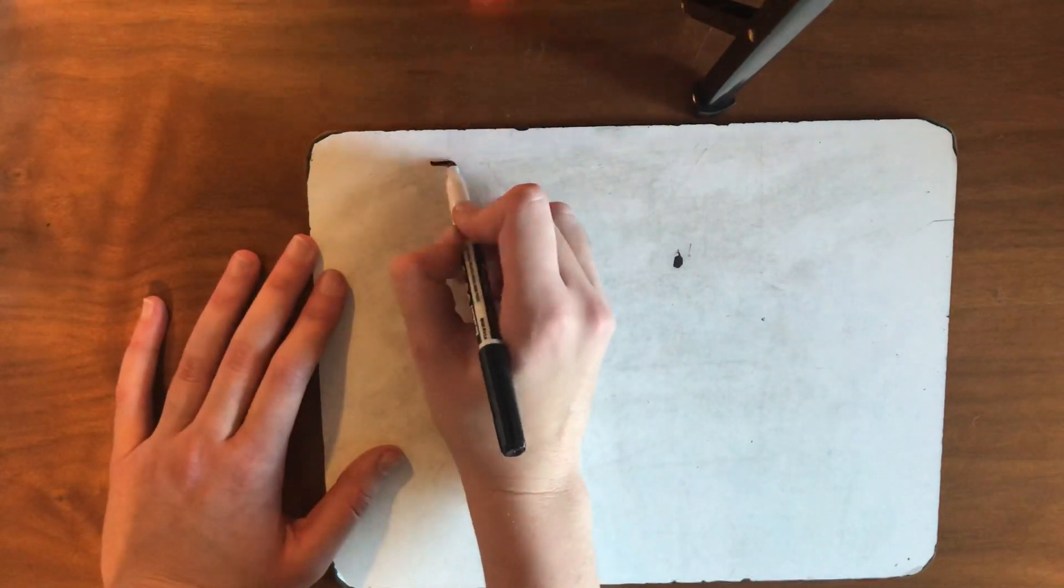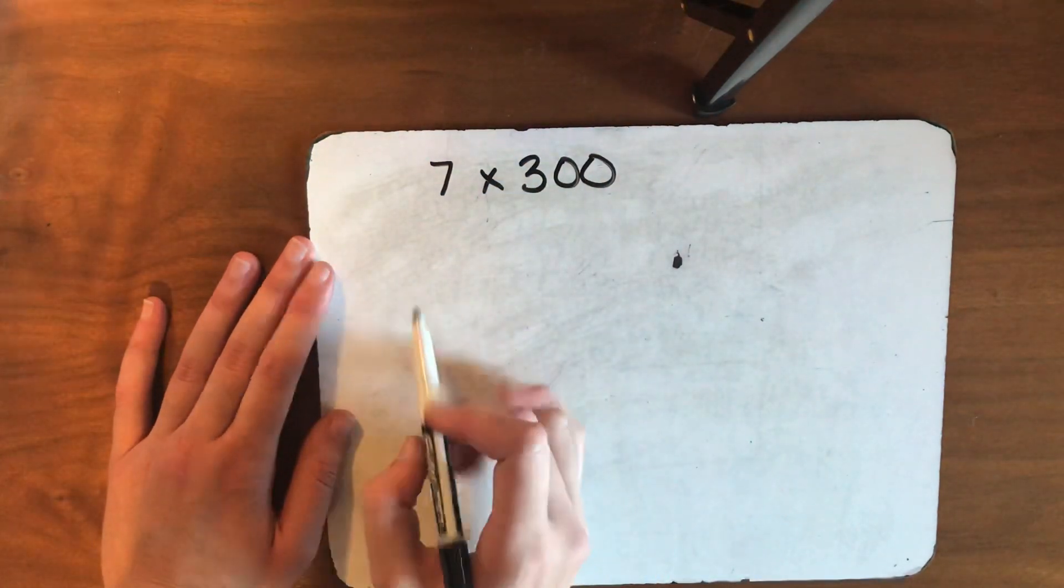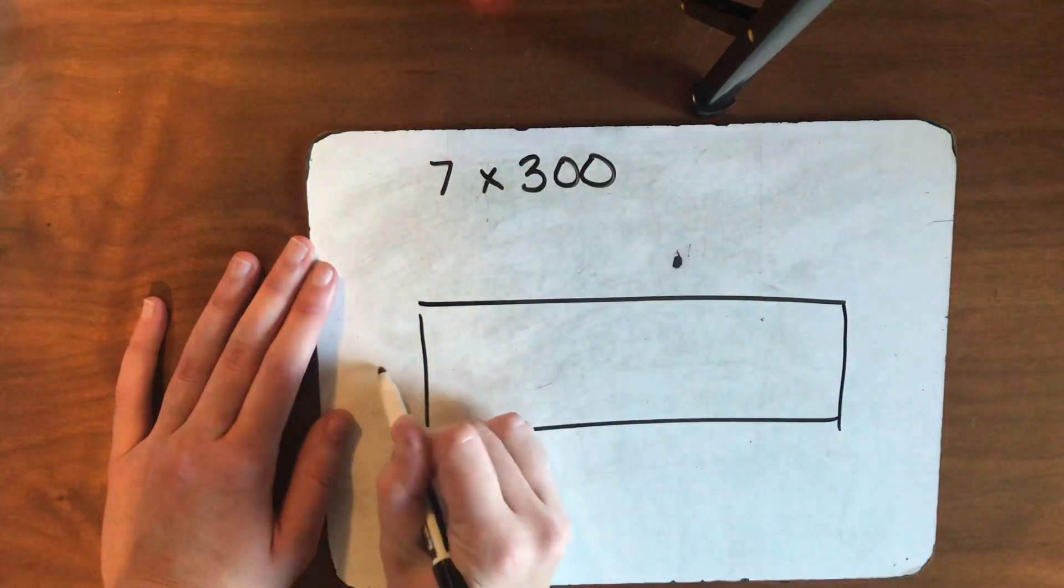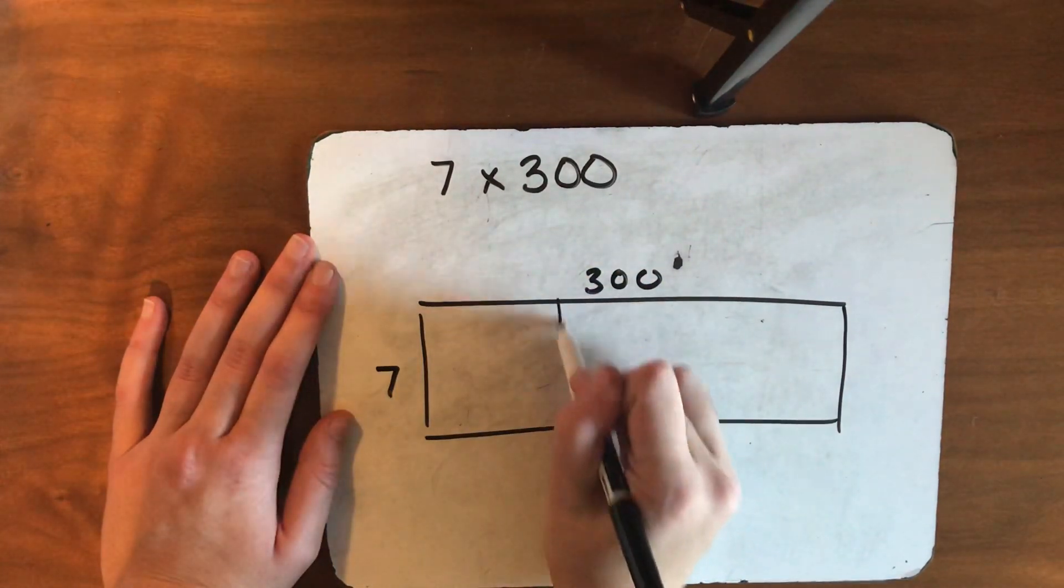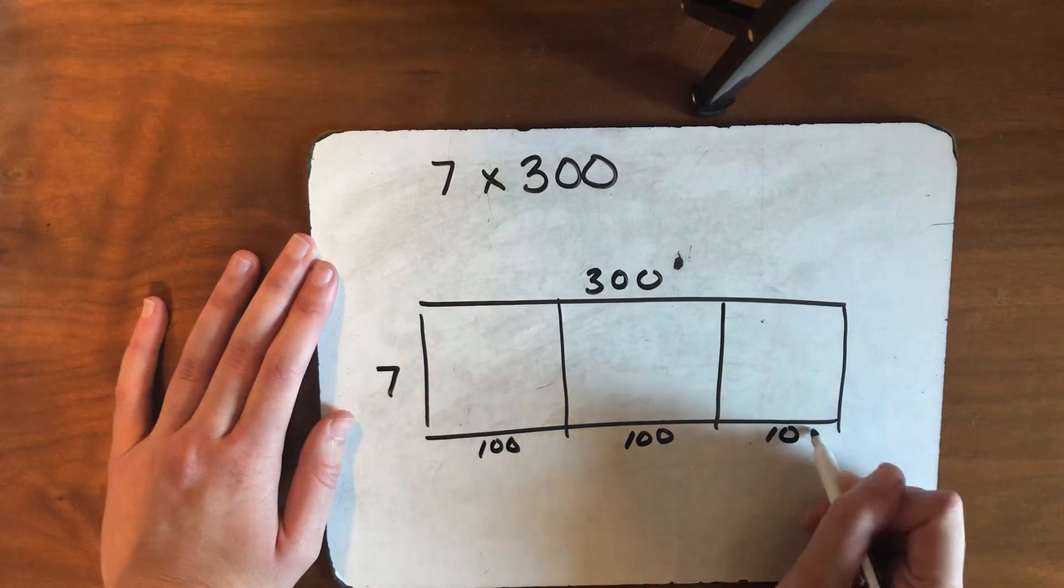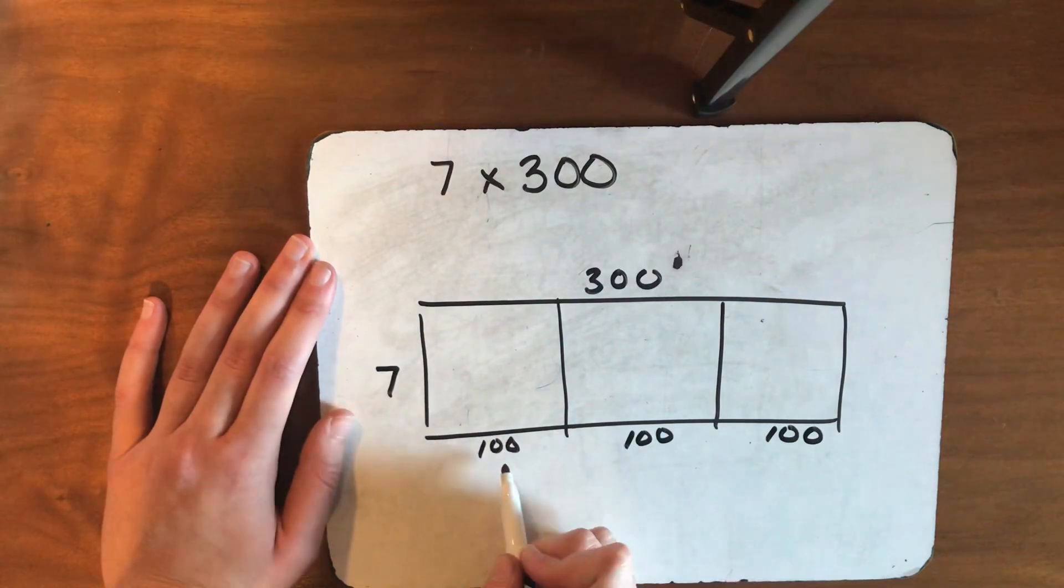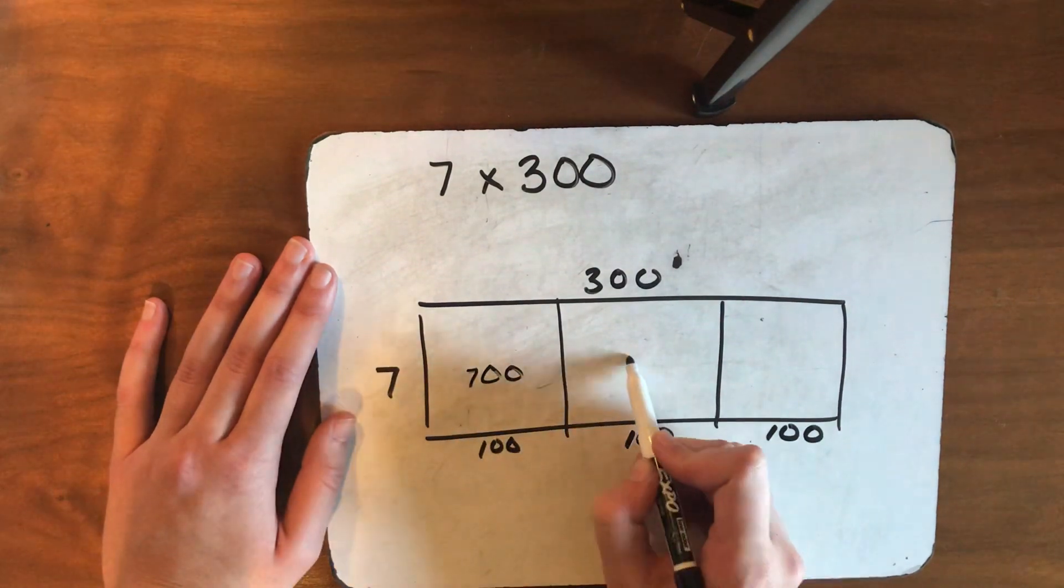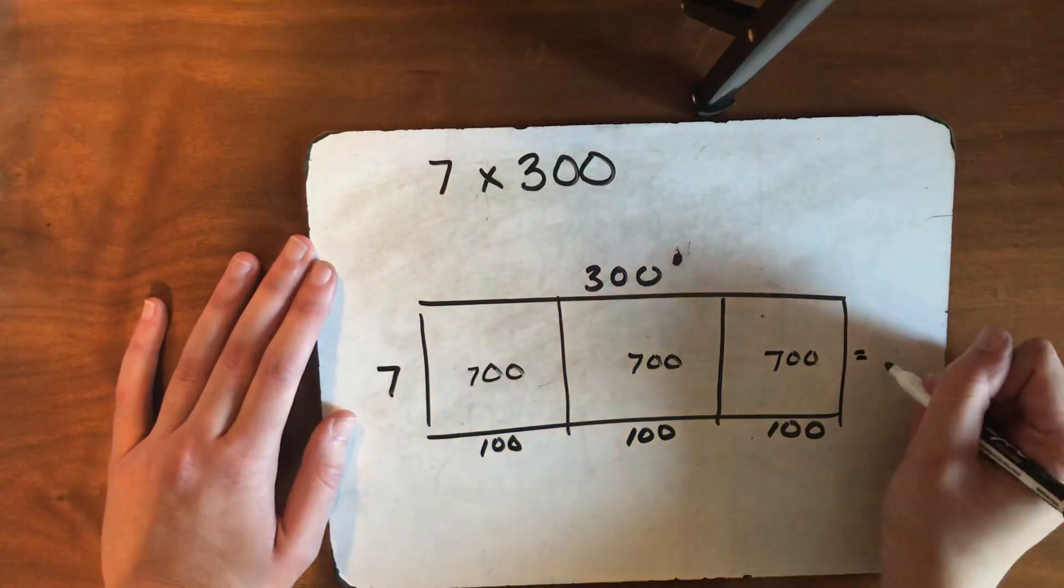Let's say if I had 7 times 300. And I had 7 on this side and 300 over here. Well, really, I could break this into 100 and another 100 and another 100 because 300 is the same thing as 100, 100, 100. Now, 7 times 100 would give me 700. 7 times 100 would give me 700. 7 times 100 would get me 700. And I could add those up to get 2,100.